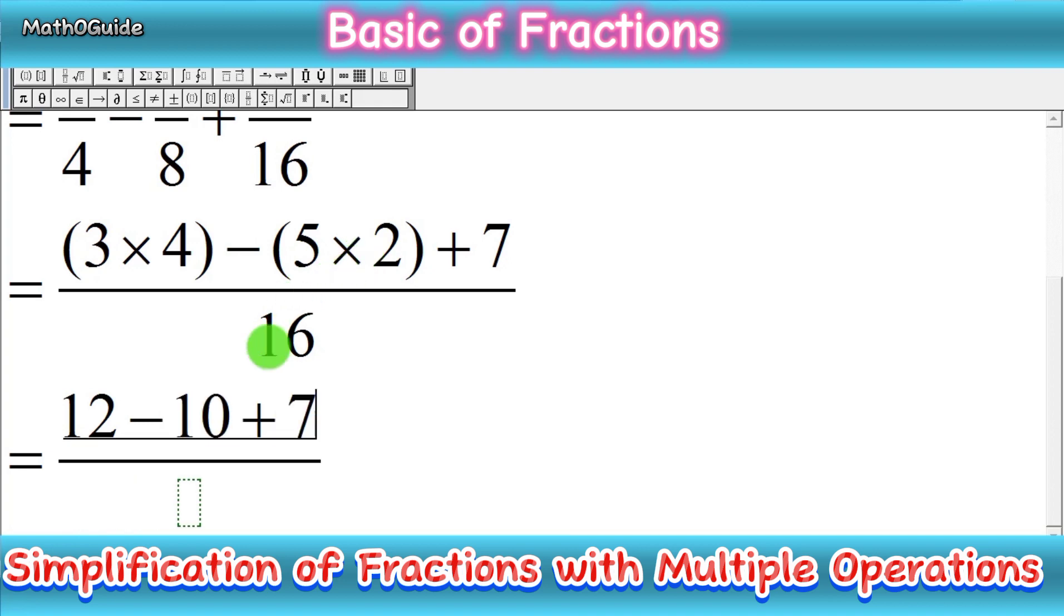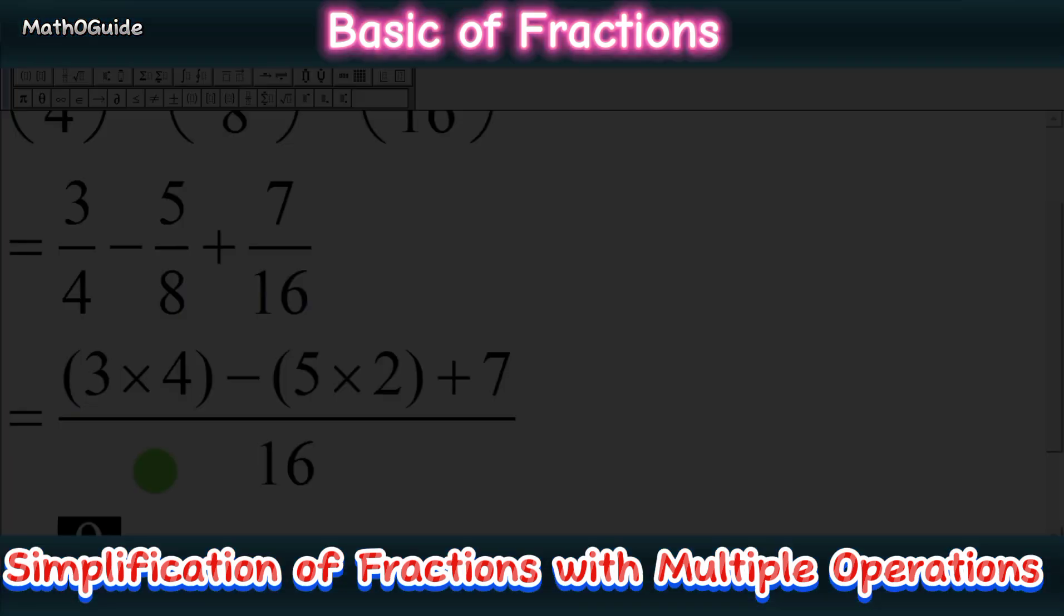Simplifying: 12 minus 10 equals 2, and 2 plus 7 equals 9, giving us 9/16. That is our simplified answer.